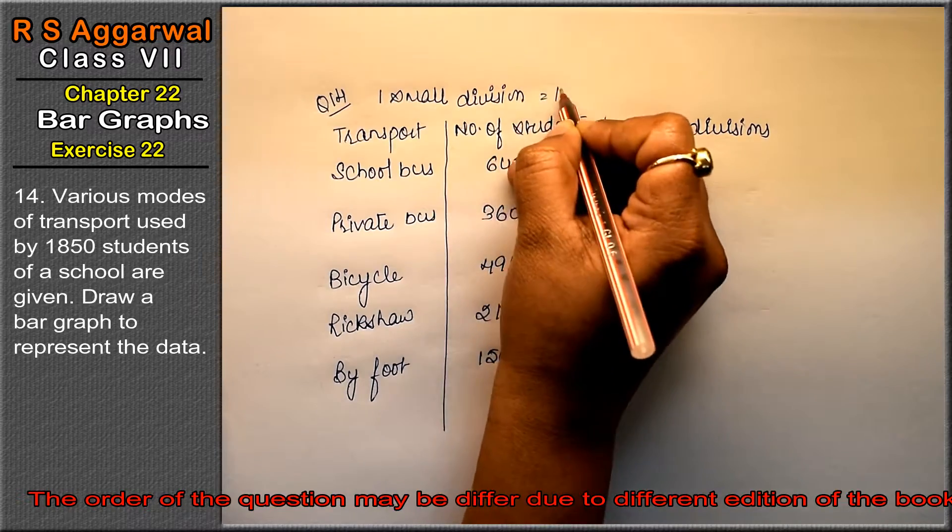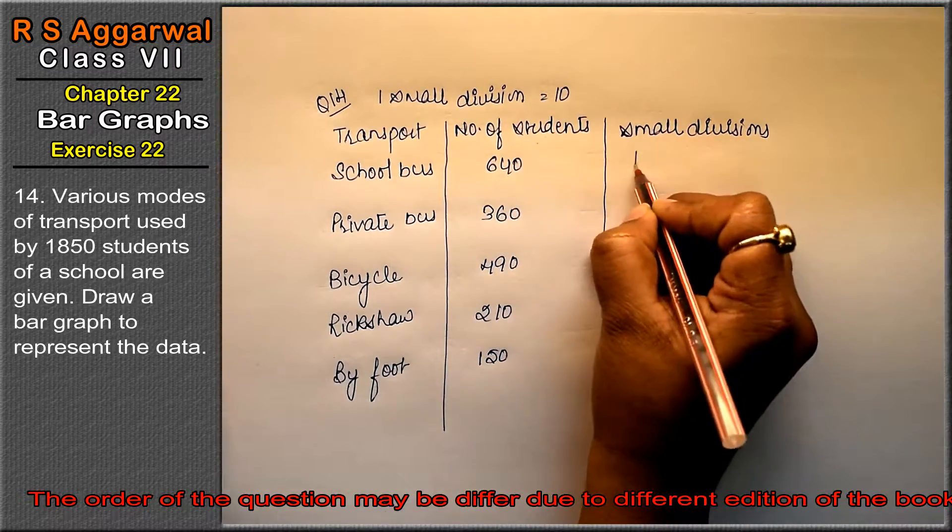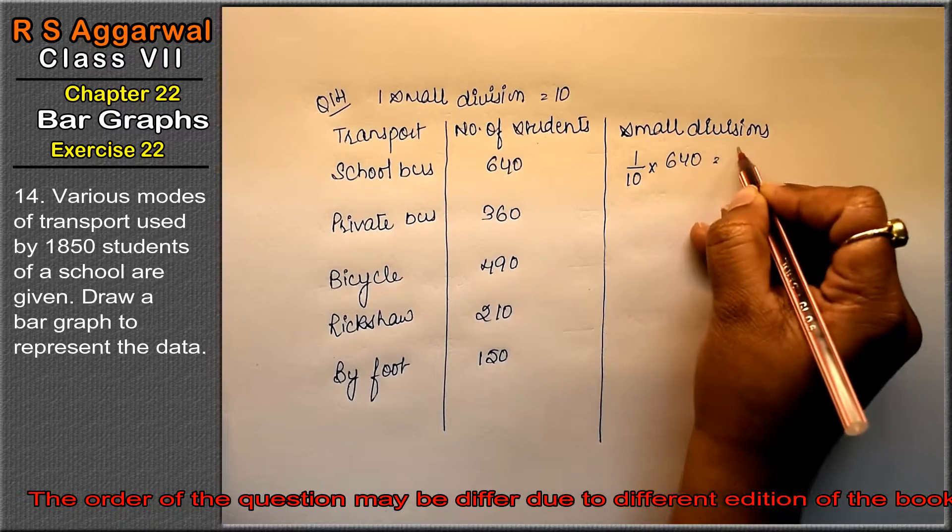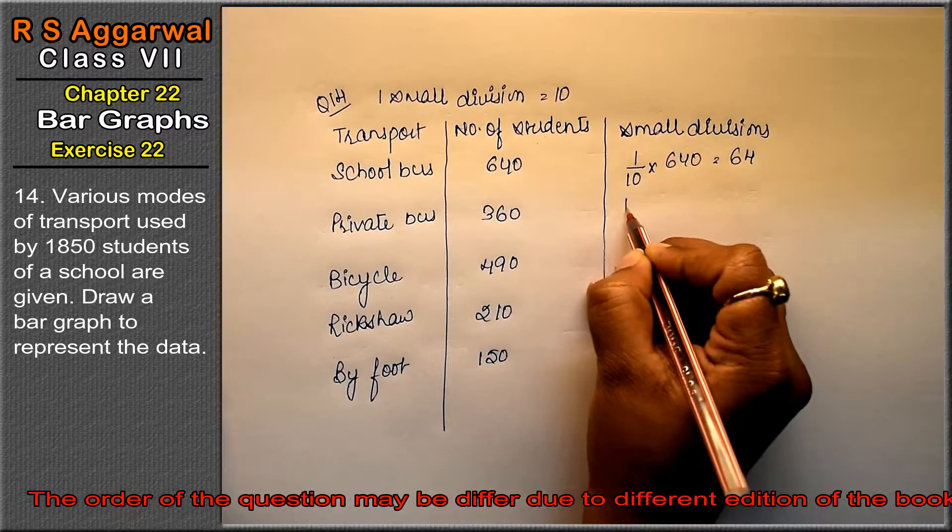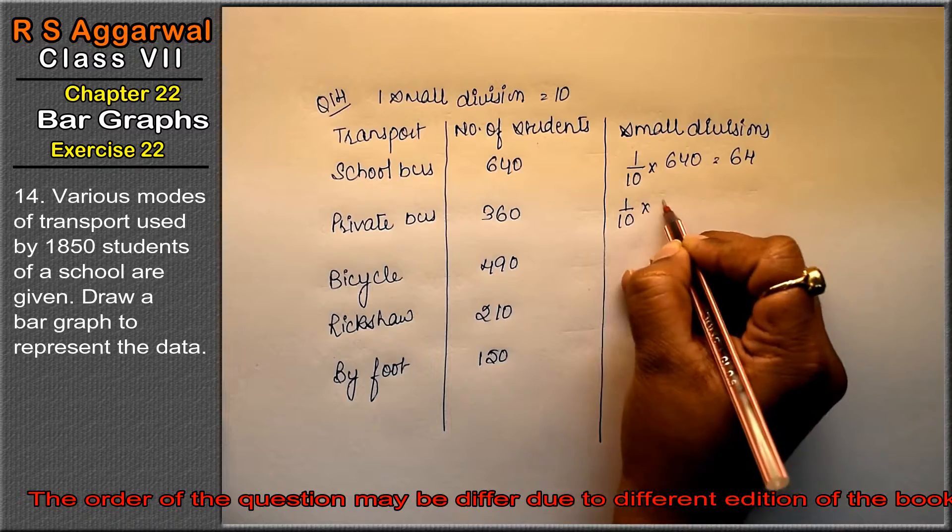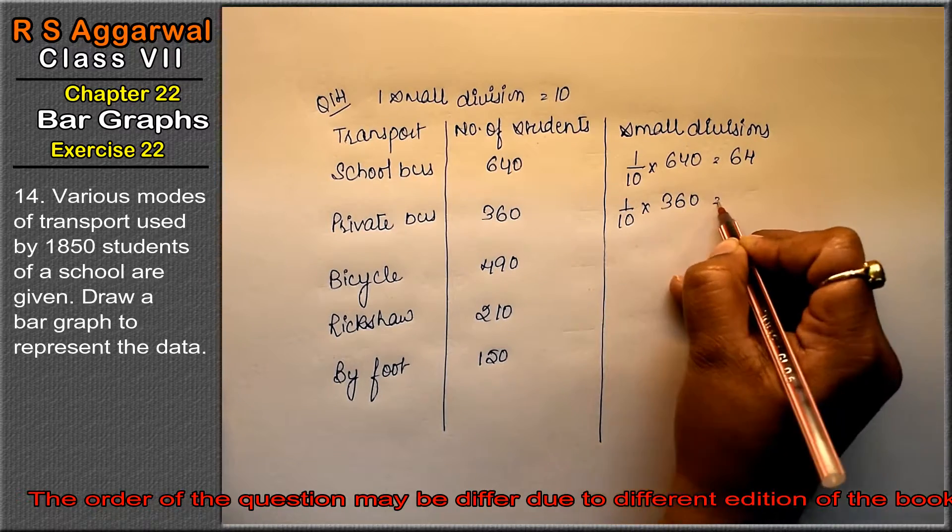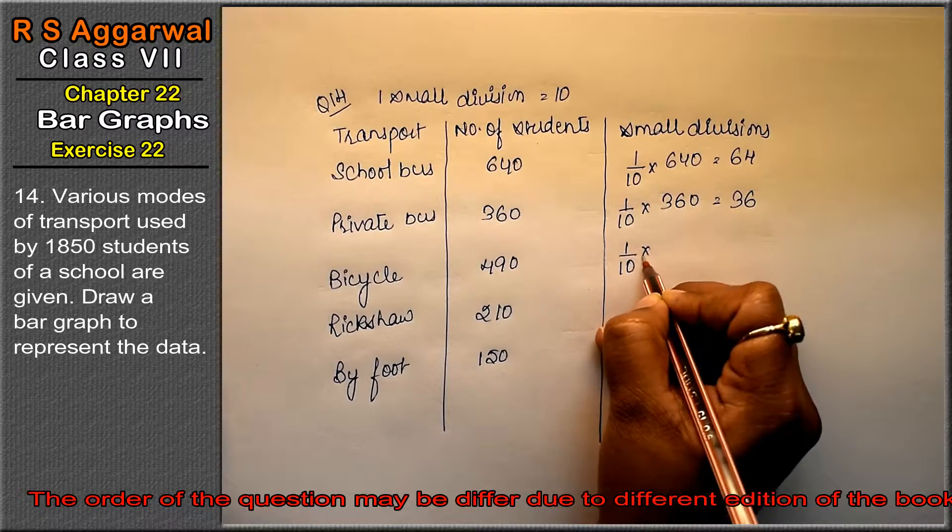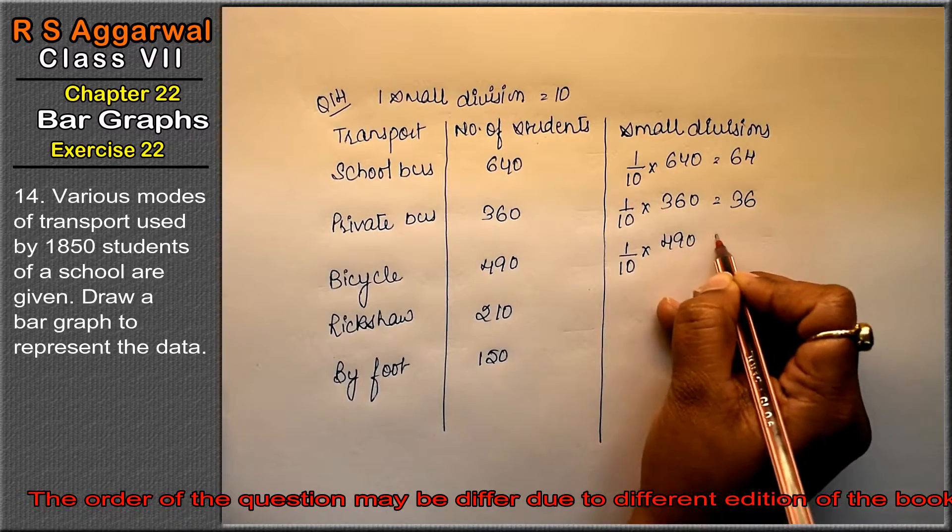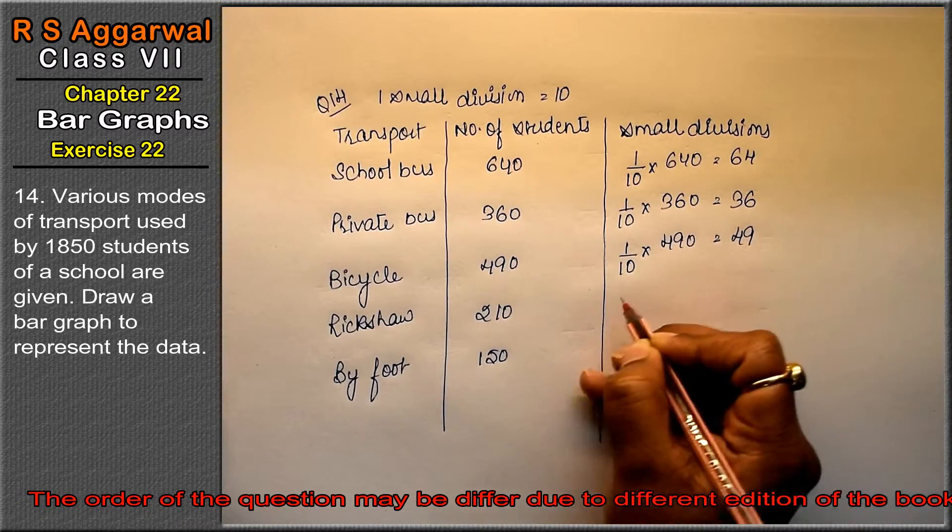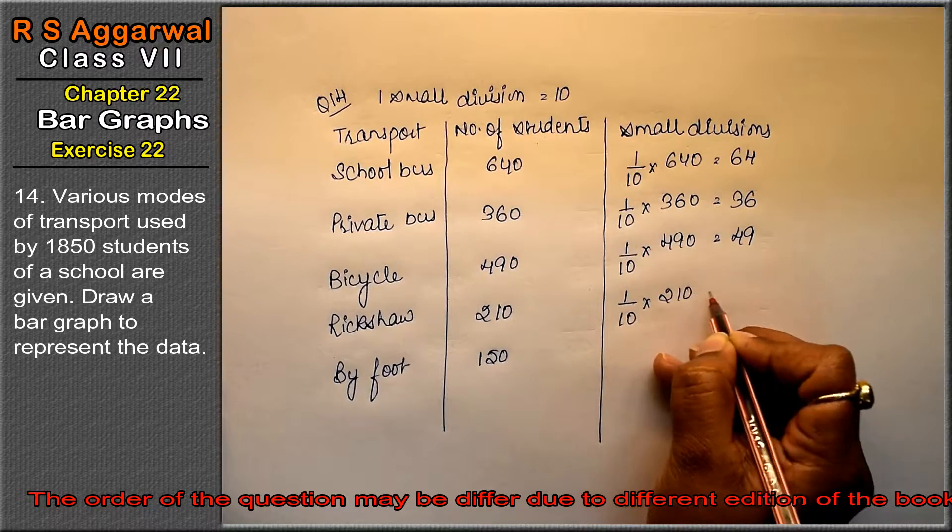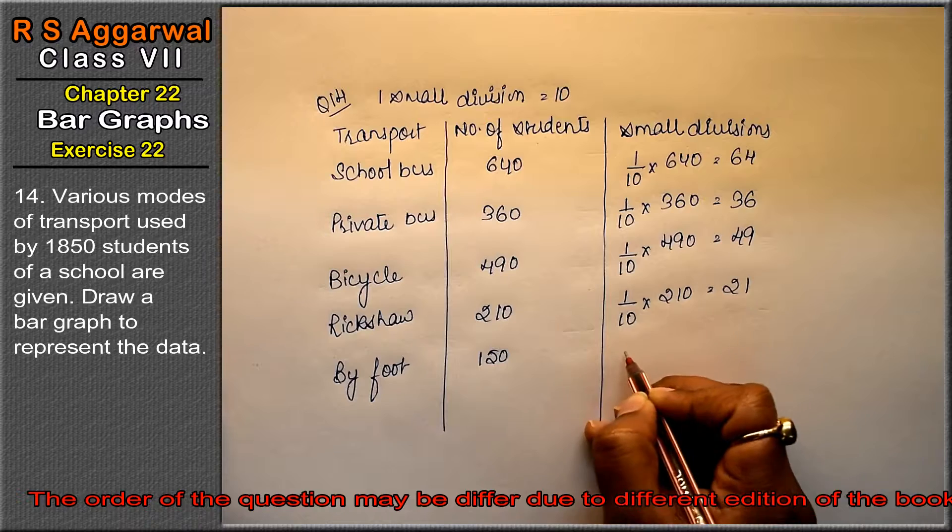So 1 upon 10 into 640 gives 64, 1 upon 10 into 360 gives 36, 1 upon 10 into 490 gives 49.